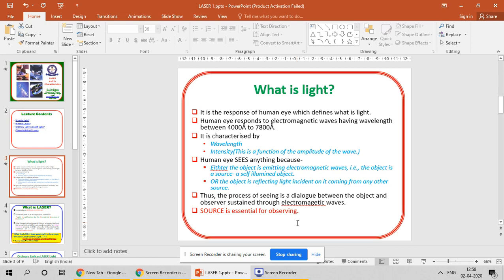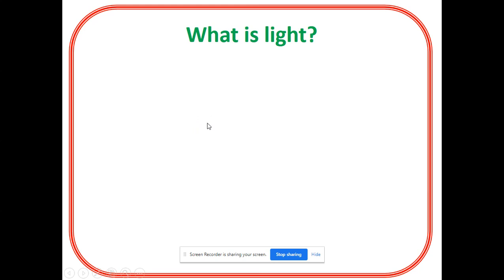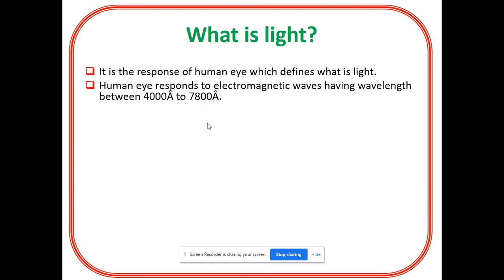In terms of physics, when we have to know what is light, it is a kind of radiant energy. This light gives response to human eyes. Our eyes are sensitive to light. In the broad electromagnetic spectrum, the light which corresponds to wavelength 4000 angstrom to 7800 angstrom